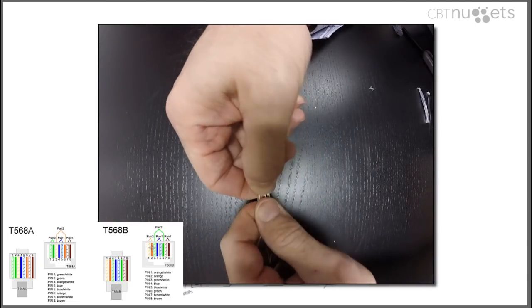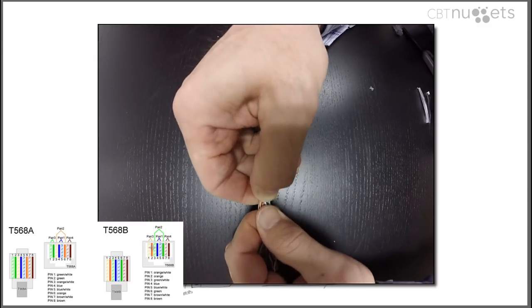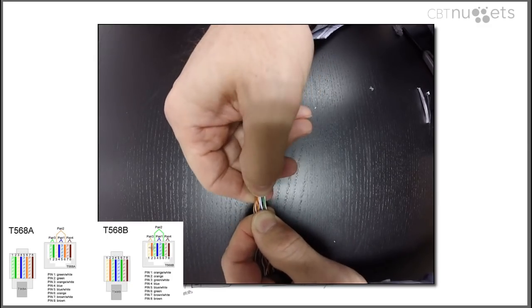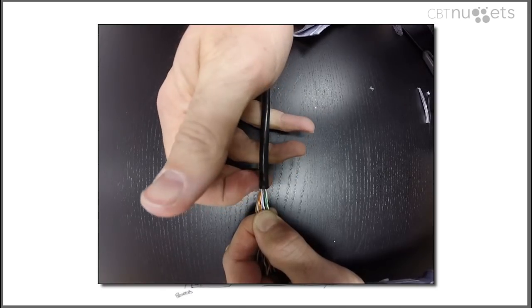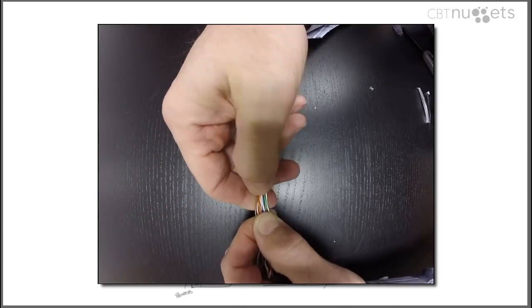Now you can see I'm just moving and wiggling these cables to get them to stay the way I have them. They're always going to try and move back to the way they're twisted inside of the shielding.